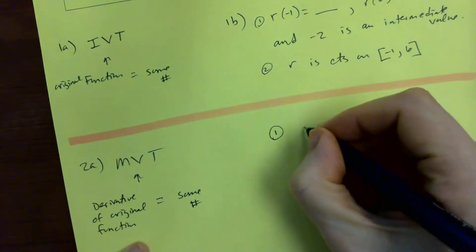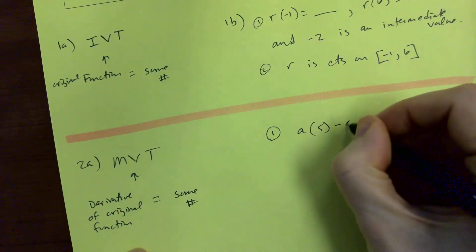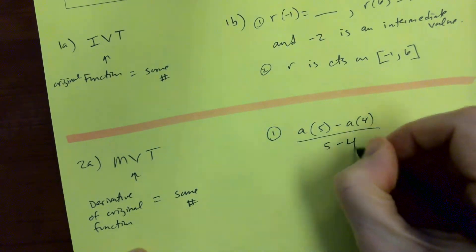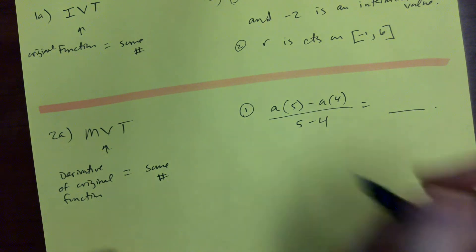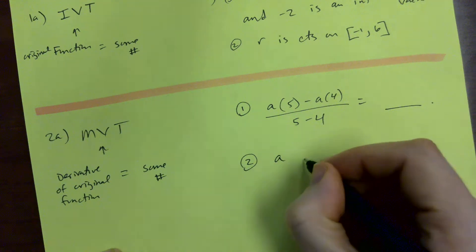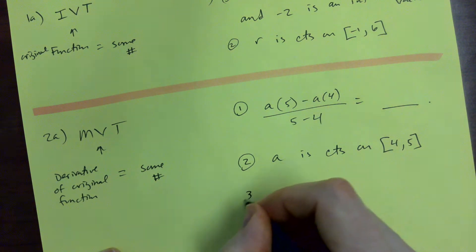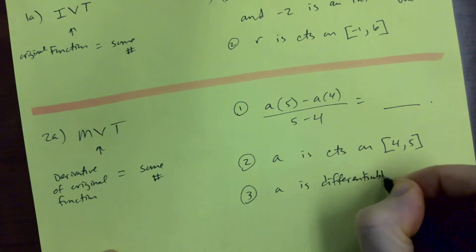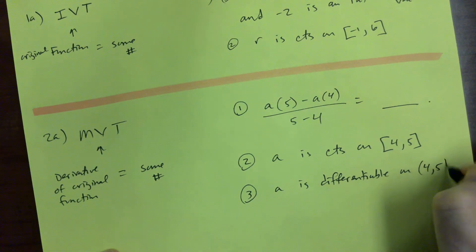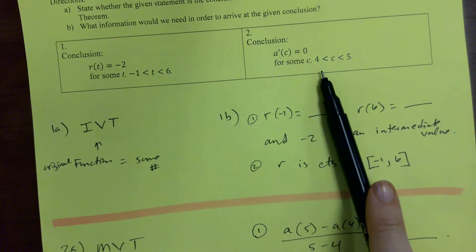First, we need to say A of five minus A of four, all over five minus four, equals blank — we need to find what that average rate of change of the original function is on the interval. Then we say A is continuous on the closed interval from four to five. Third, A is differentiable on the open interval from four to five. If we say those three things, then we can automatically say therefore by the mean value theorem — and there's our conclusion.